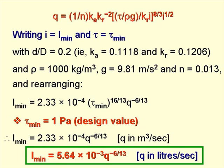If we now write i as i_min and τ as τ_min, and for a d over D value of 0.2, that is to say a k_a value of 0.1118 and a k_r value of 0.1206, and with ρ equals a thousand kilograms per cubic metre, g equals 9.81 metres per second squared, and n equals 0.013, and rearranging,